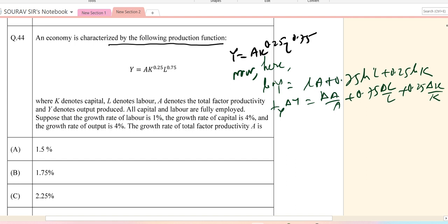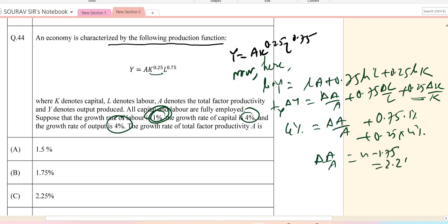Del Y by Y equals del A by A plus 0.75 into del L by L plus 0.25 into del K by K. The growth rate of labor is 1%, capital is 4%, output is 4%. So this is 0.75 into 1% and 0.25 into 4%, so you have 4% here. So del A by A is 4 minus 1.75, which equals 2.25%. So option C is the correct answer.